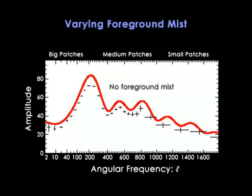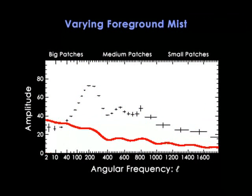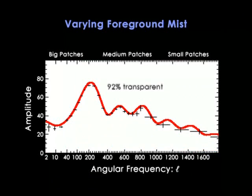My last example is to vary the time at which the first stars form. Remember, they re-ionize the gas and create a foreground mist through which we see the microwave background. With no foreground mist, the model lies above the data, but as the mist gets thicker and thicker, the microwave background appears more and more blurred, and its patchiness gets washed out, so the measured sound spectrum gets weaker and weaker. The data suggest the mist isn't very thick — about 92% transparent — which corresponds to a time for the birth of the first stars around 400 million years, with an uncertainty of about 30%. If you think about it, that's a really quite remarkable measurement.